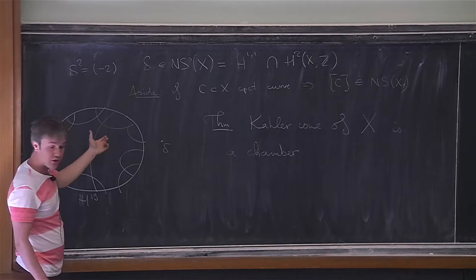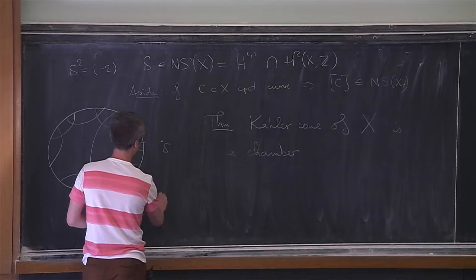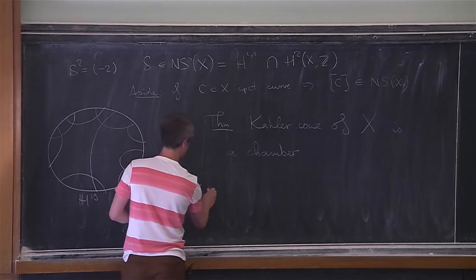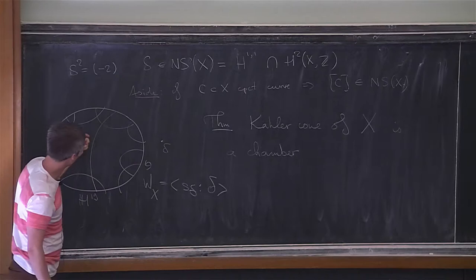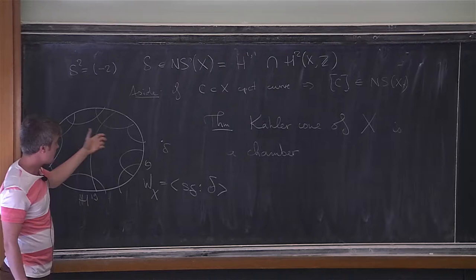The chambers will all be isometric, because this reflection group W_X acting on this whole space was generated by the reflections s_delta, and the reflection group acts transitively on the chambers. The Kähler cone picks out one of these chambers.